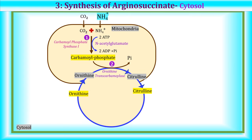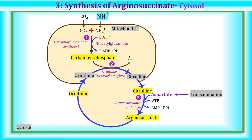The third reaction of the urea cycle is synthesis of arginosuccinate, occurring in the cytosol. Aspartate combines with citrulline to form arginosuccinate, catalyzed by arginosuccinate synthetase. Aspartate is derived from a transamination reaction. This reaction requires ATP, which is cleaved into AMP and pyrophosphate; the pyrophosphate is further broken down into two molecules of inorganic phosphate — meaning two high-energy bonds are consumed, equivalent to two ATP molecules. The second nitrogen atom of urea is derived from aspartate, and the first from ammonia.